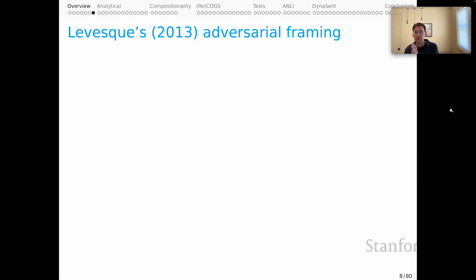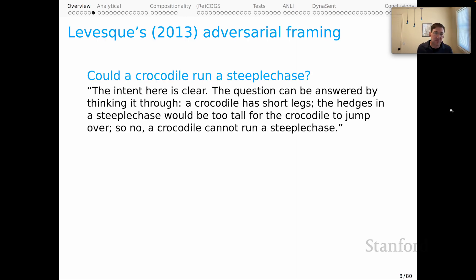Hector Levesque took this further in a way that I think has proved really inspiring for the field. He says, for example, could a crocodile run a steeplechase? The intent here is clear. The question can be answered by thinking it through. A crocodile has short legs. The hedges in a steeplechase would be too tall for the crocodile to jump over. So no, a crocodile cannot run a steeplechase. Again, evoking this idea of doing a mental simulation about a very unfamiliar situation and arriving at a systematic answer to the question.